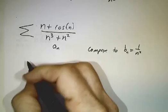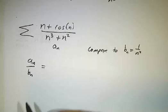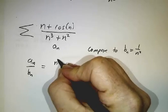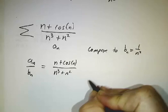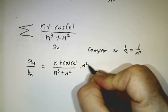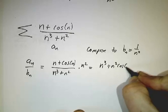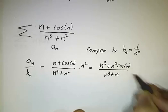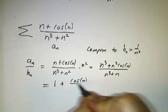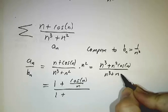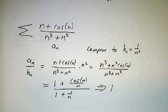And let's take the ratio. You take a_n divided by b_n. And that's going to be n plus cosine of n divided by n cubed plus n squared divided by 1 over n squared. So that means times n squared. So that's n cubed plus n squared cosine of n over n cubed plus n squared. And that's 1 plus cosine of n over n divided by 1 plus 1 over n. And that approaches 1. The ratio approaches 1.